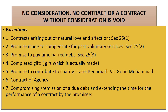Point number six: contract of agency. It is a contract where one party called the agent agrees to work for another party called the principal, as per instruction, for certain commission. But at the time of entering the agreement between the parties, there is no consideration moving from one party to another.